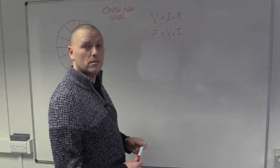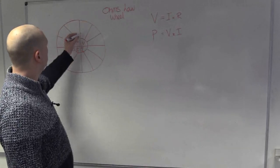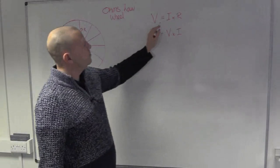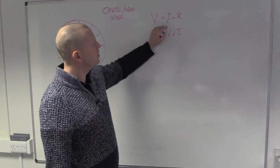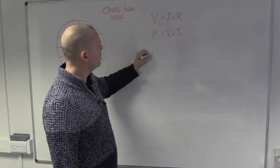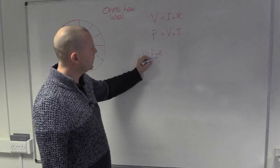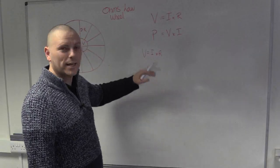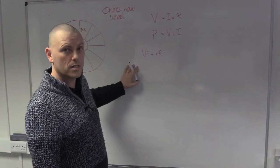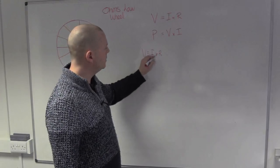How do we get those two equations into that many? The answer is transposition and substitution. Starting with Ohm's Law, we've got three parameters, so we can get three equations out of it. The first one is already done: V = I × R. Now we can transpose to get an equation for current. I need to isolate current, which means getting rid of resistance. The rules of transposition say whatever I do to one side I must do to the other.